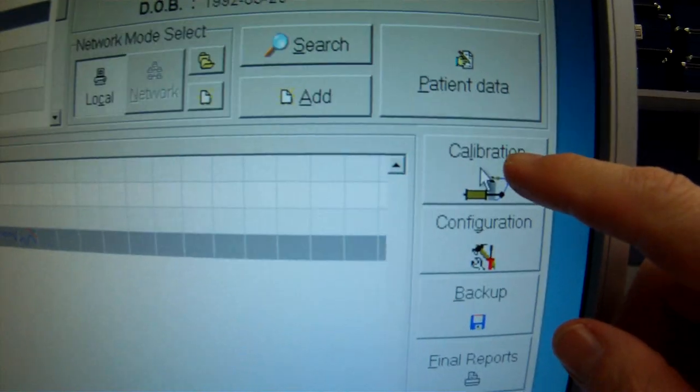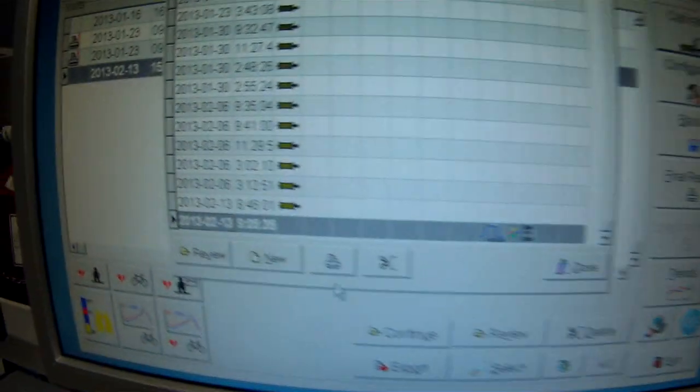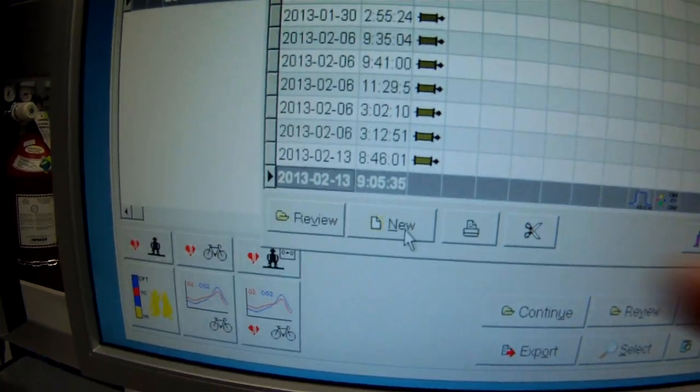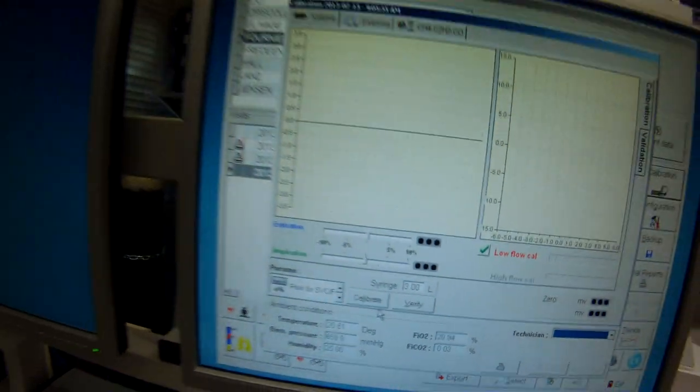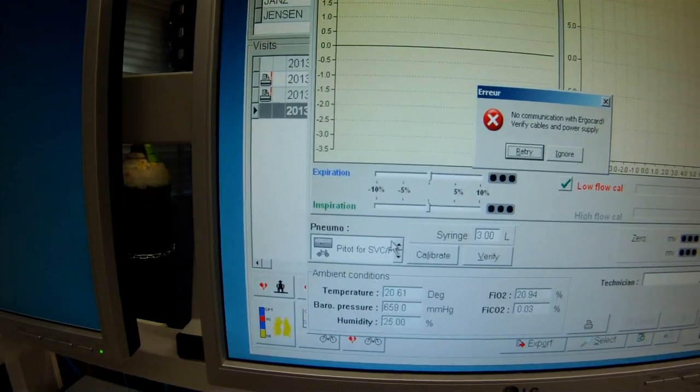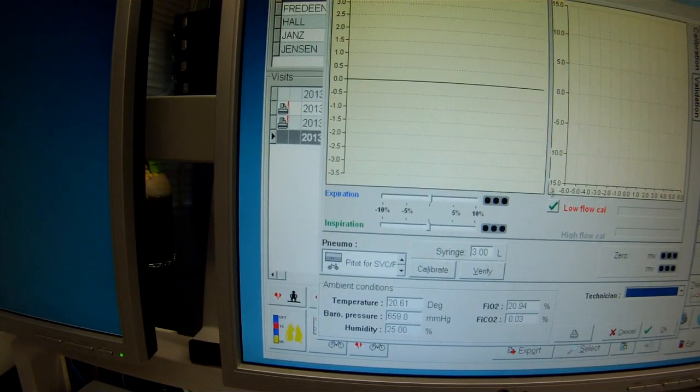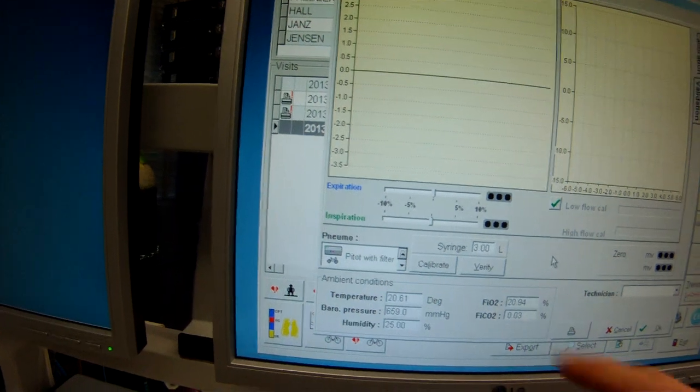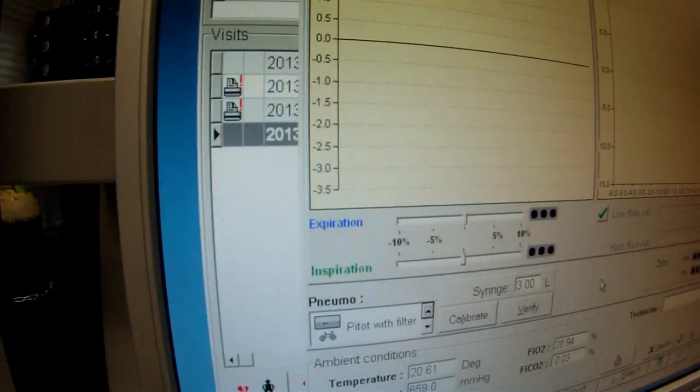So come over to our software. Here's our computer screen, and what we're concerned about here is we're going to do a calibration. We're going to do a new calibration. So we'll talk about new. And it comes up here now. Now, one of the peculiarities of this particular setup we've got here today is that we need to have this set to pitot tube with filter. We need pitot tube with filter established on that.